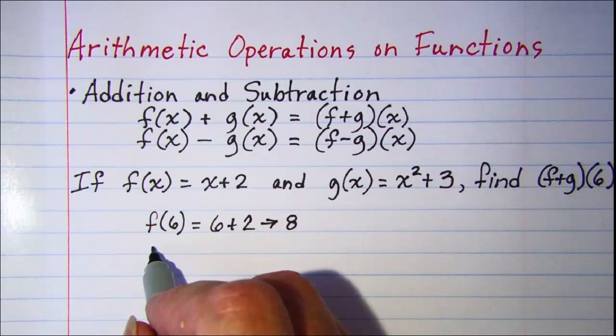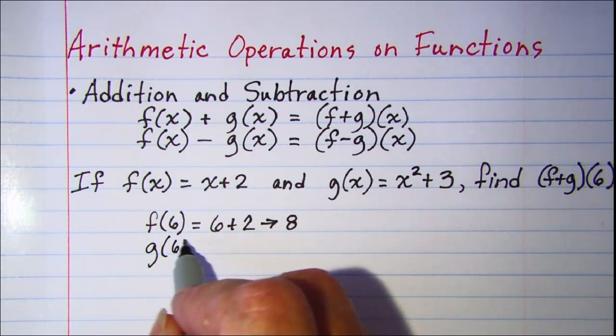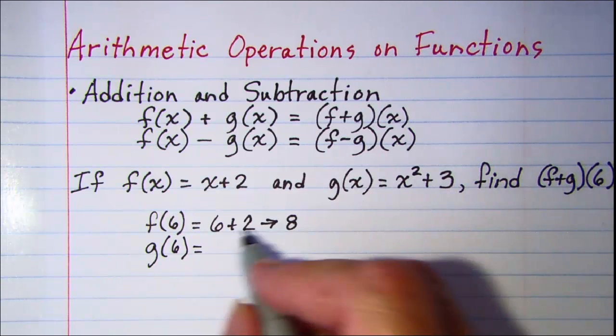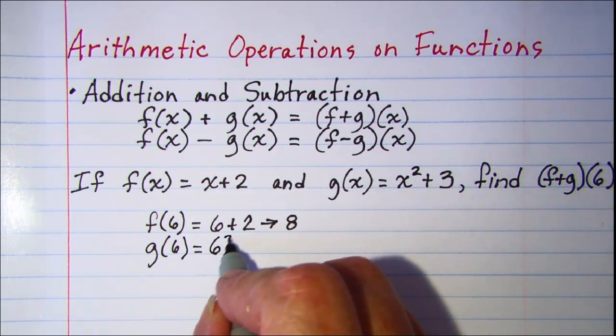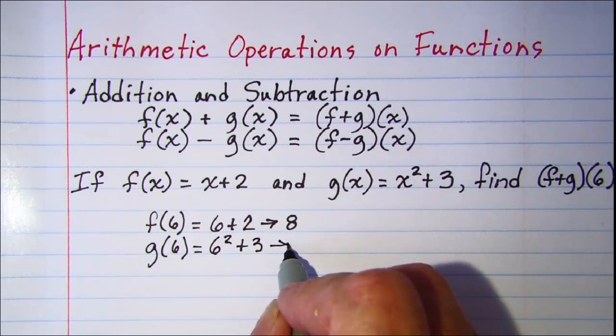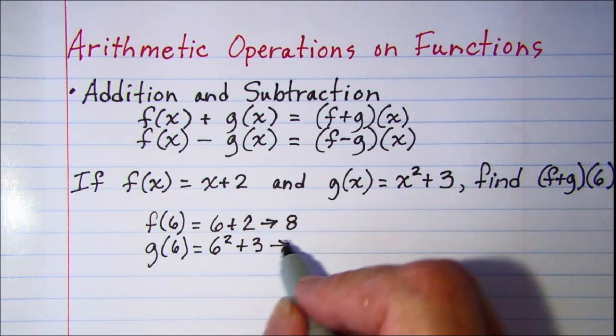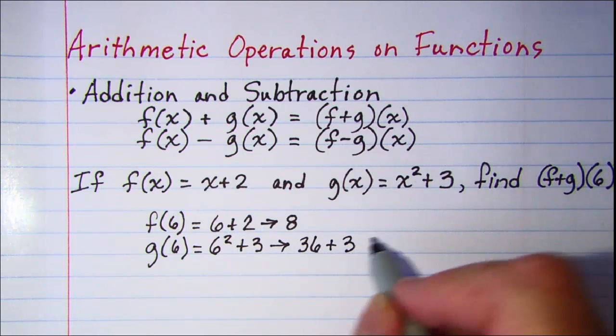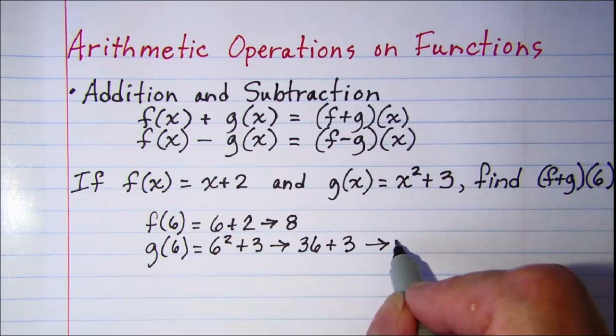We can also find g(6) by substituting 6 into the g function. So that would be 6² + 3. 6 squared is 36 plus 3 is 39.